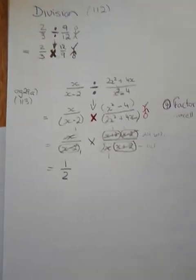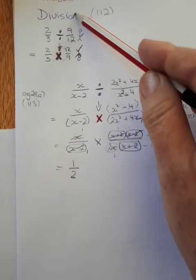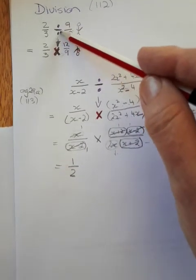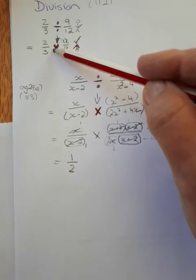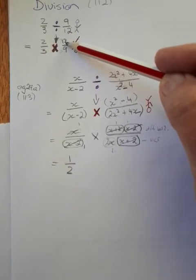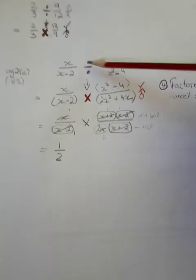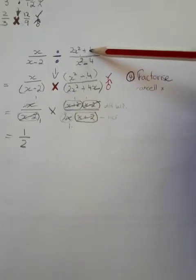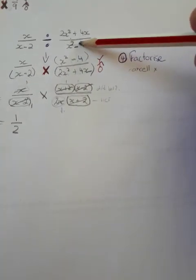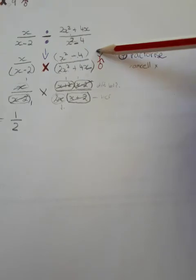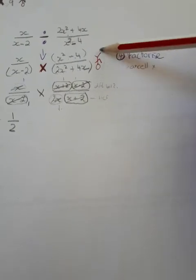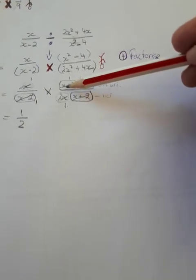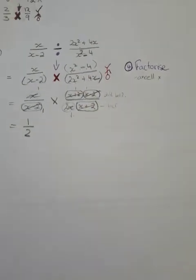To repeat: the division of algebraic fractions is really just one additional step. That additional step is to change the division to multiplication and use the reciprocal afterwards — take the division, change it to a multiplication, make the numerator the denominator and the denominator the numerator. Thereafter you just apply the rules for multiplication of fractions.